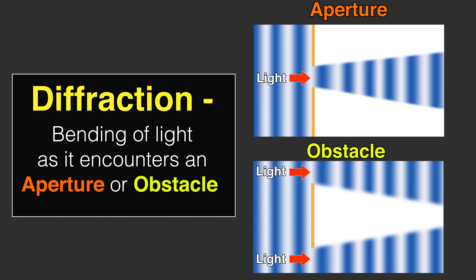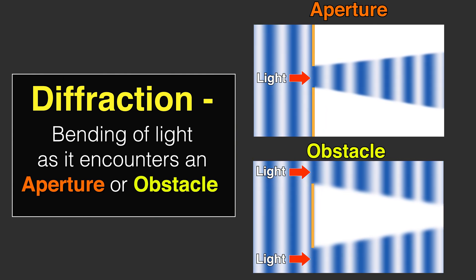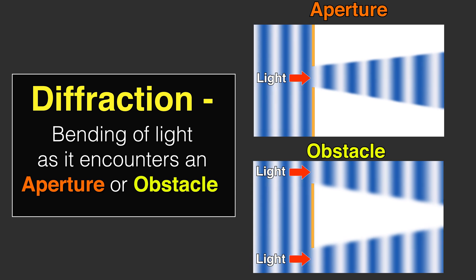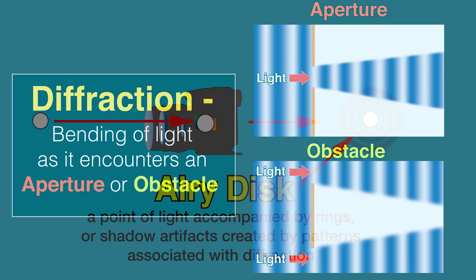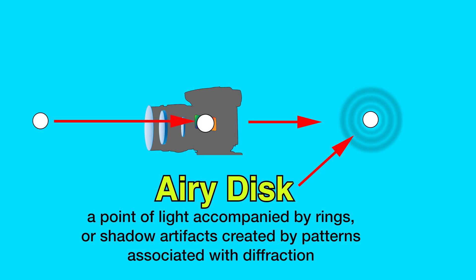So in summary, what is diffraction? It's the bending of light as it encounters an aperture or an obstacle. Because of this bending, points of light are actually formed as airy disks which have a shadow or an artifact based on the shape of the aperture that surrounds that point of light.